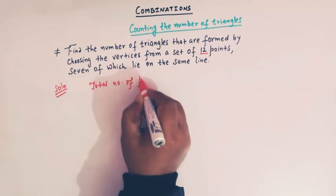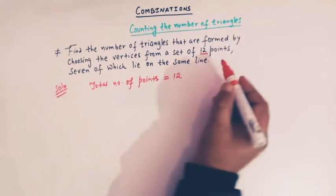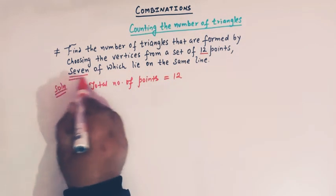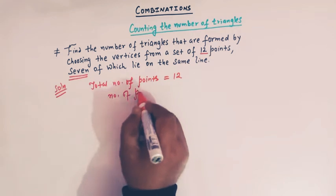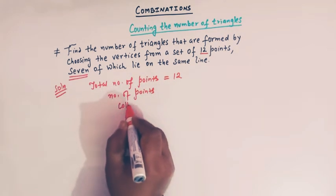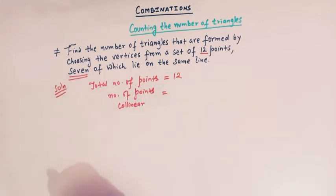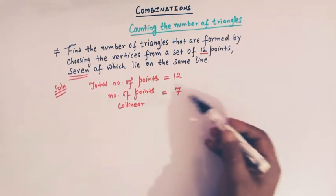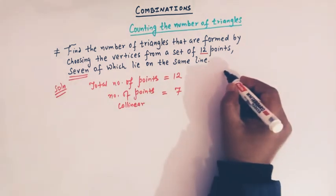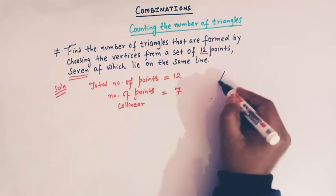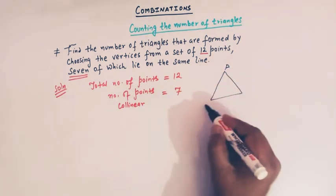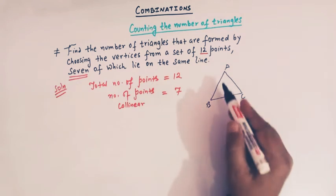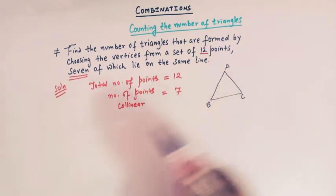The total number of points is given as 12, and out of these 12 points, 7 lie on the same line. So the number of collinear points — points which lie on the same line — is 7. Now we know that in order to have a triangle, we need three non-collinear points to form a triangle.